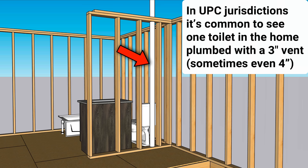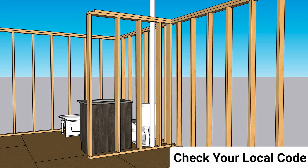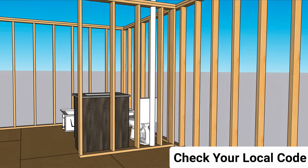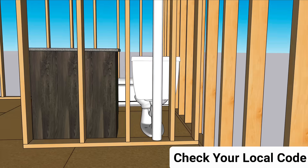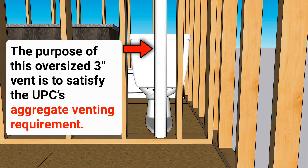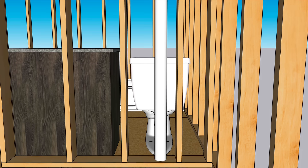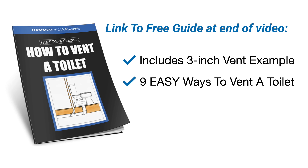In UPC jurisdictions it's common to see one toilet in the home plumbed with a three inch vent or even sometimes a four inch vent. The purpose of this oversized vent is to satisfy the UPC's aggregate venting requirement. Aggregate venting is a topic for another video, but if you want to see an example of a toilet plumbed with a three inch vent, hang out to the end because our free toilet venting guide includes an example with a three inch vent.